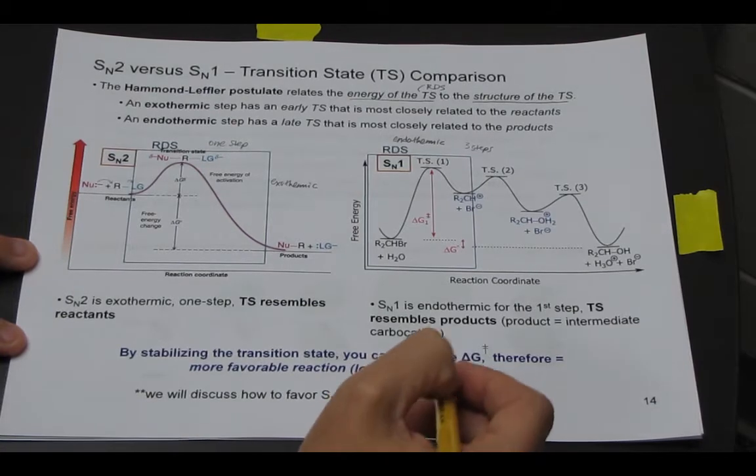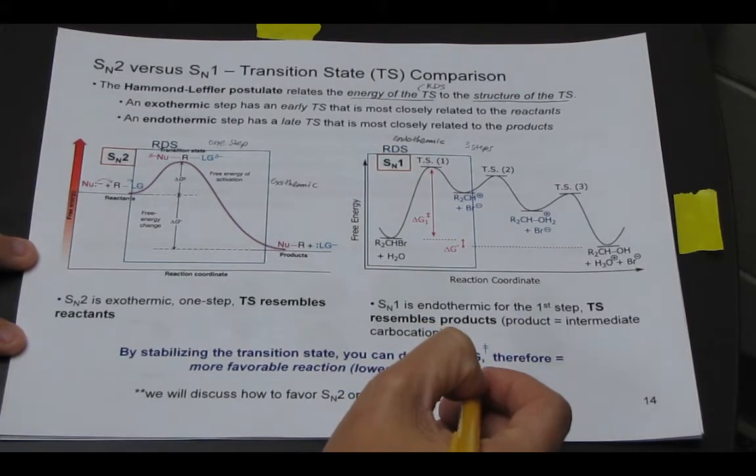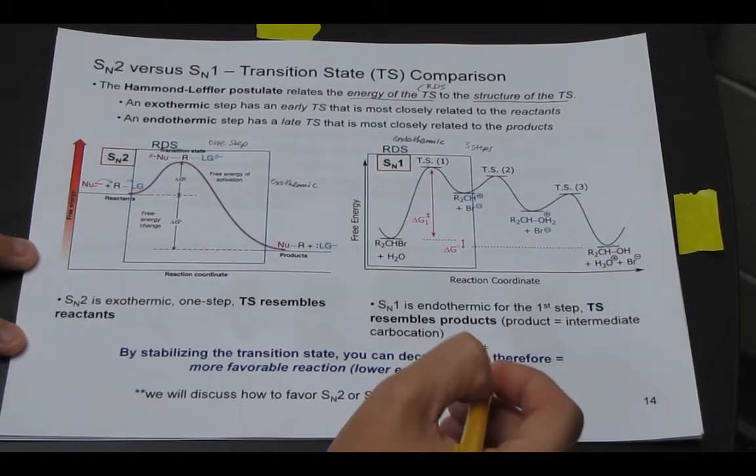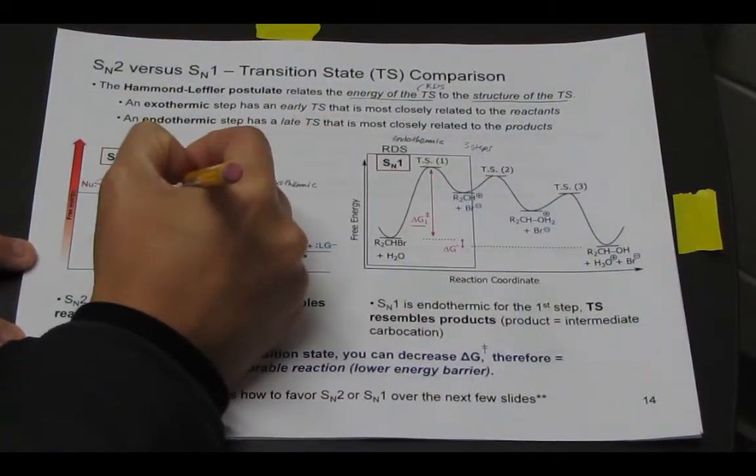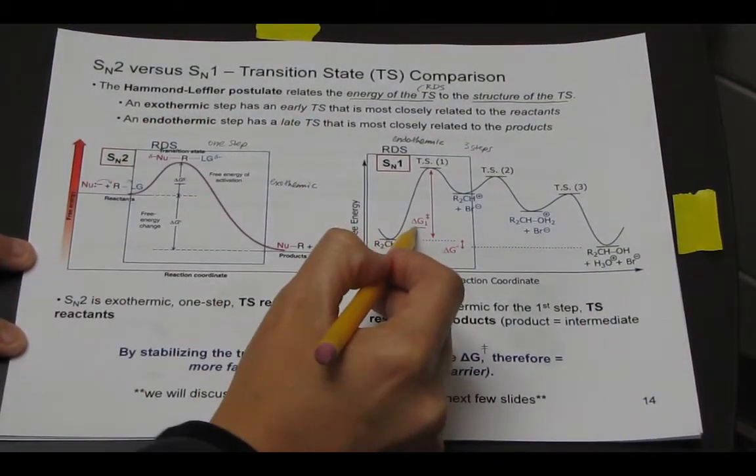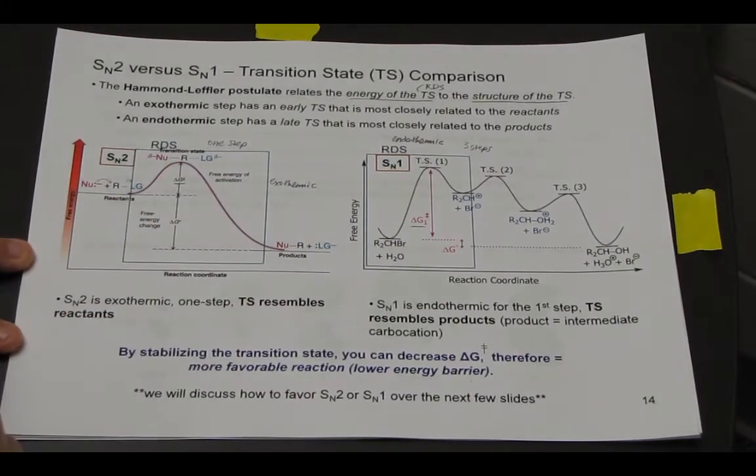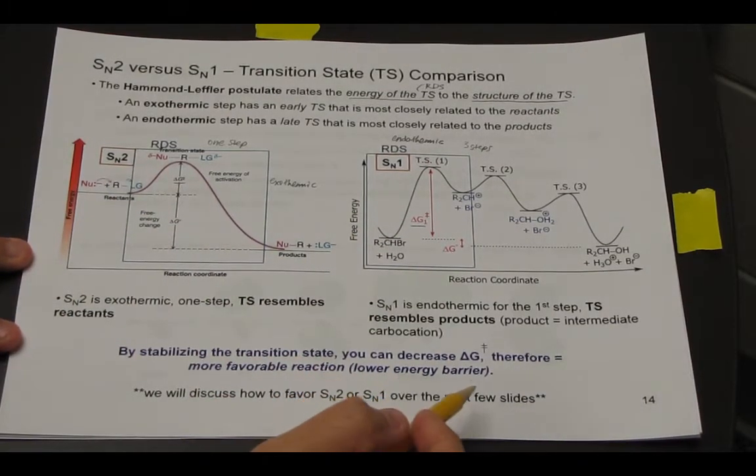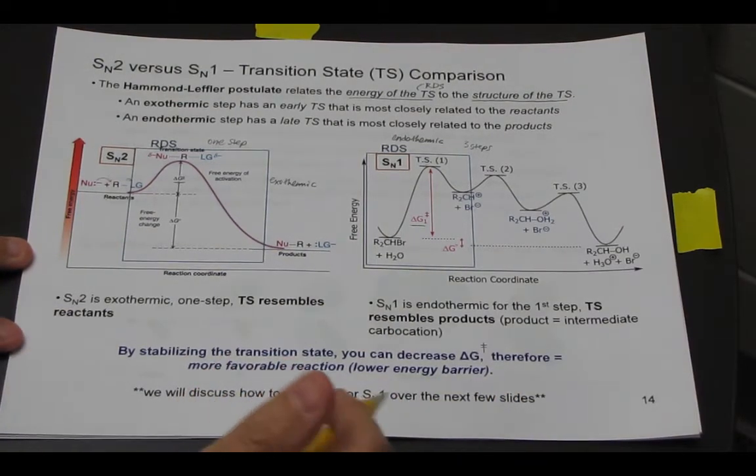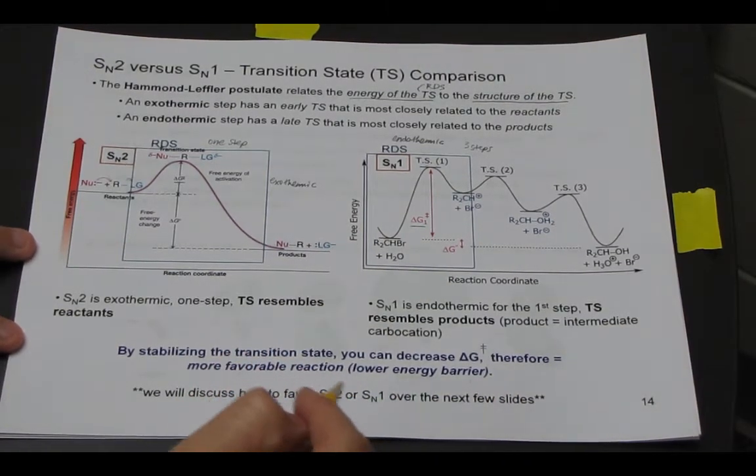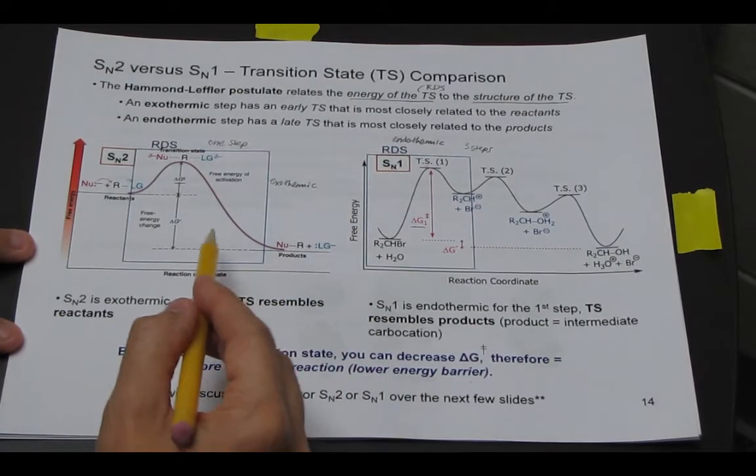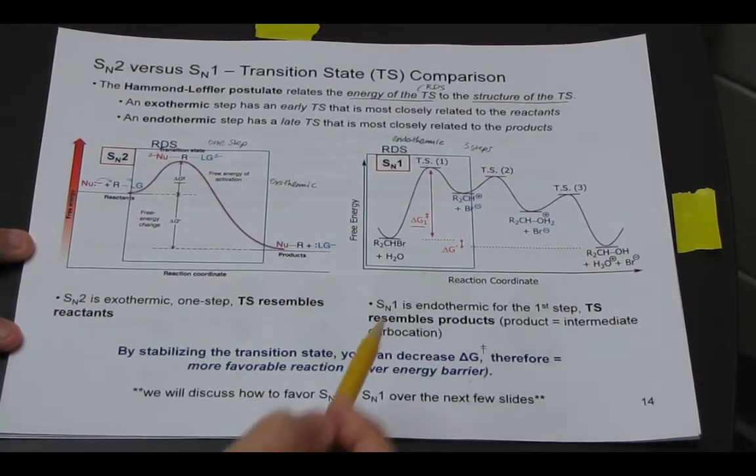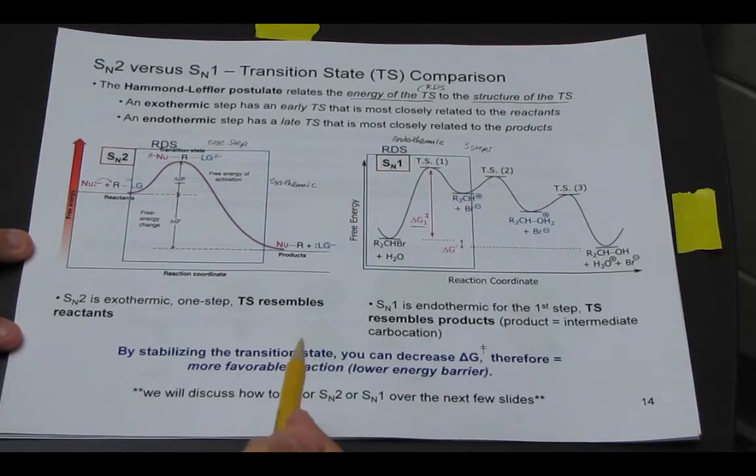And so if these are the slow steps of each reaction, and we want to speed up the reaction, we want to lower this energy. And basically what this is saying here is if we can stabilize the transition state, you can decrease delta G double dagger, which is the energy of that transition state. So if we can decrease this delta G, we're going to have faster reactions in each case, because we're going to have lower energy barriers. And so that's the goal over these next few slides, is how can we lower the energy barrier for SN2, and how can we lower the energy barrier for SN1.